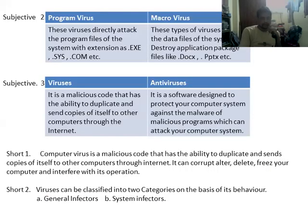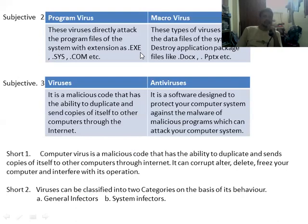Question number two of the subjective part: difference between program virus and macro virus. A program virus directly attacks the program files of the system with extensions like .exe, .com, etc. These are executable files mainly executed like system files when we are loading the system, so they mainly manage the execution of programs.